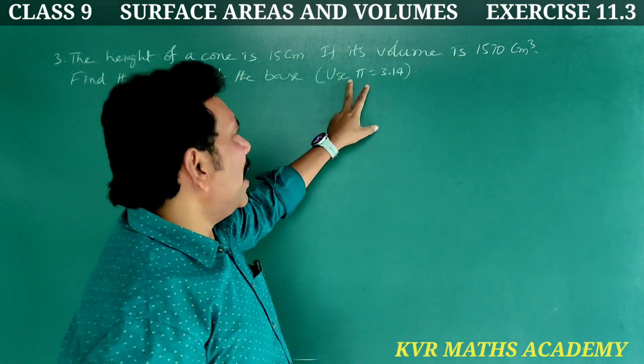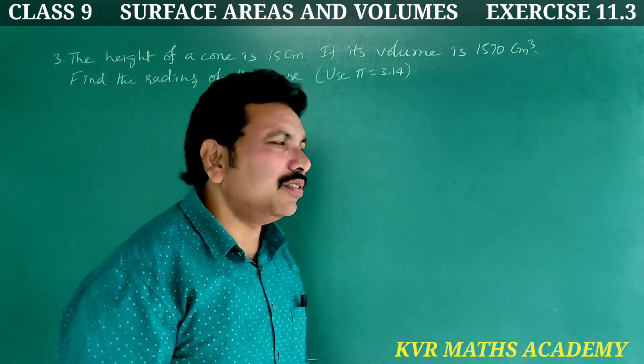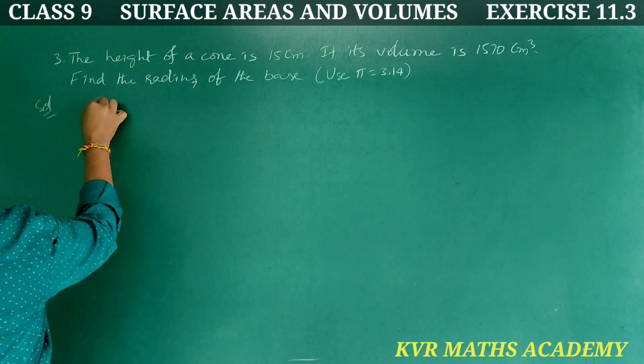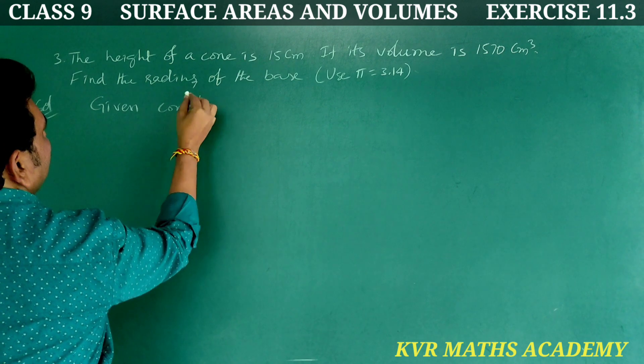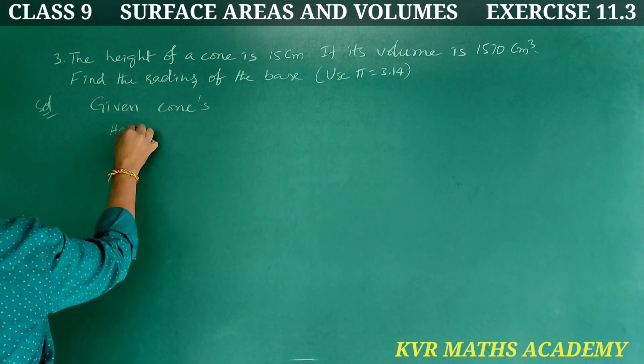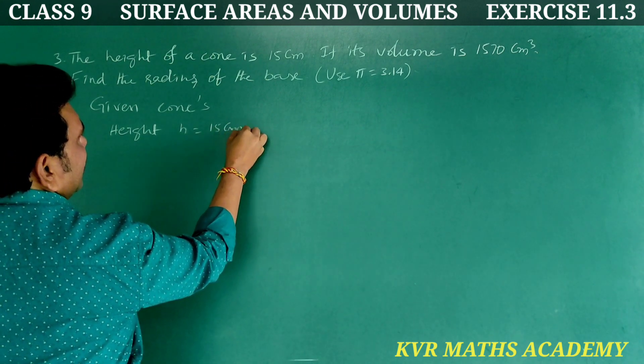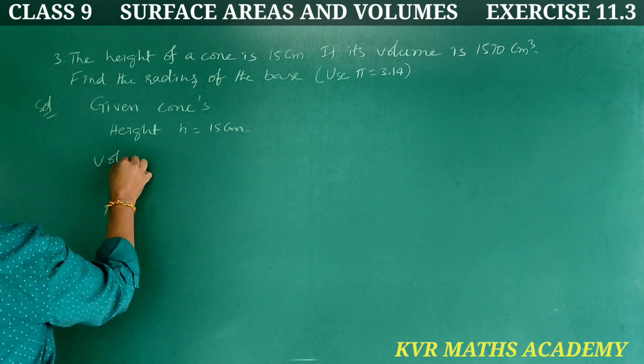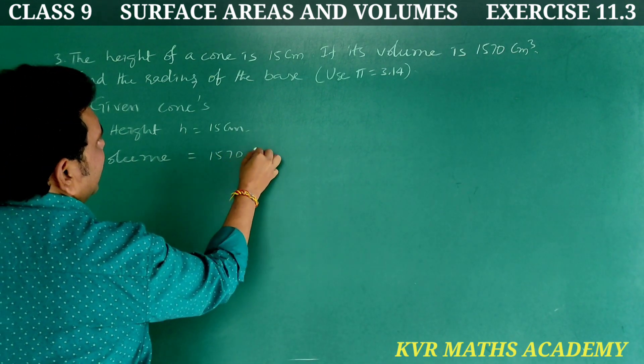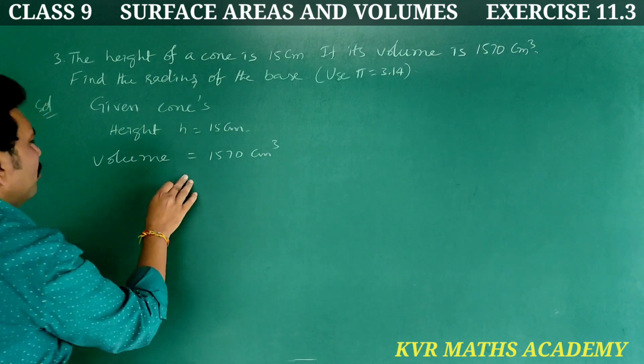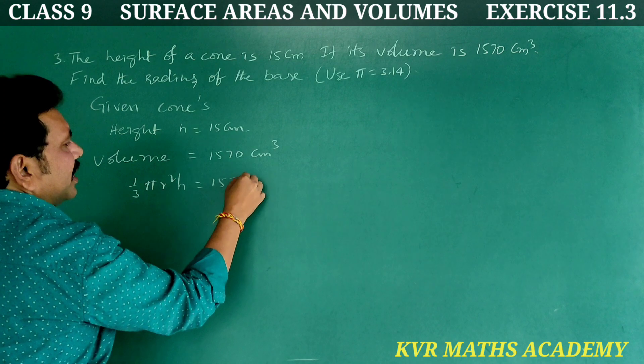Here pi is equal to 3.14. Let us do. Solution: given cone's height h is equal to 15 centimeters. Next, volume is equal to 1570 centimeter cube. Volume formula: 1 by 3 pi r square h is equal to 1570.